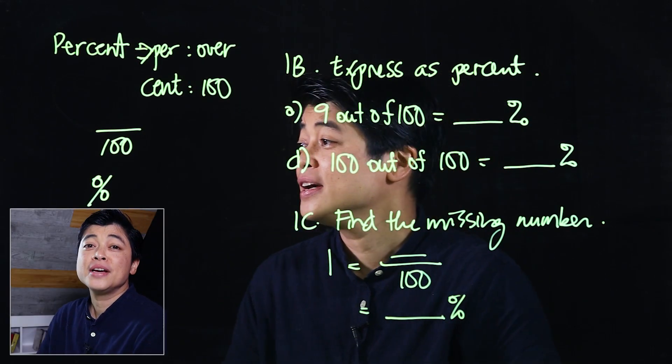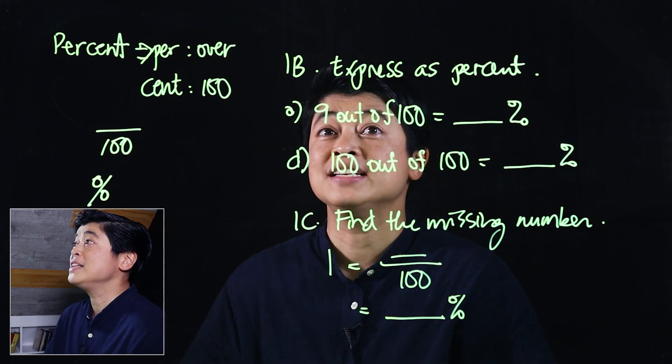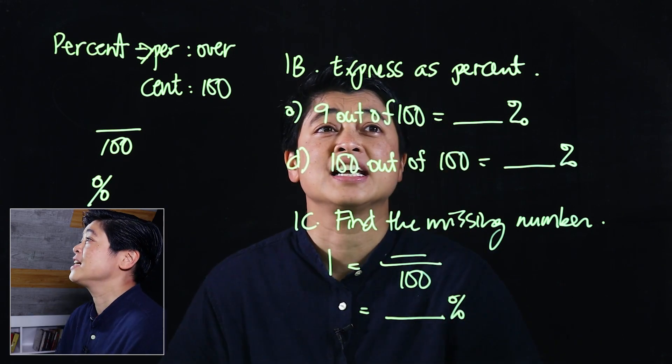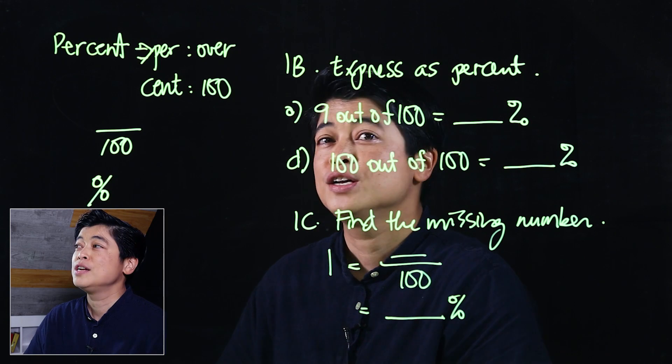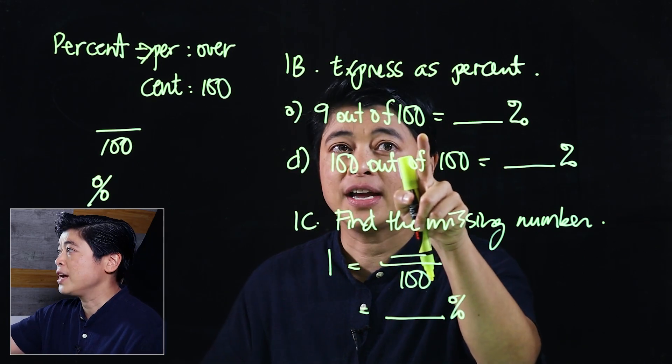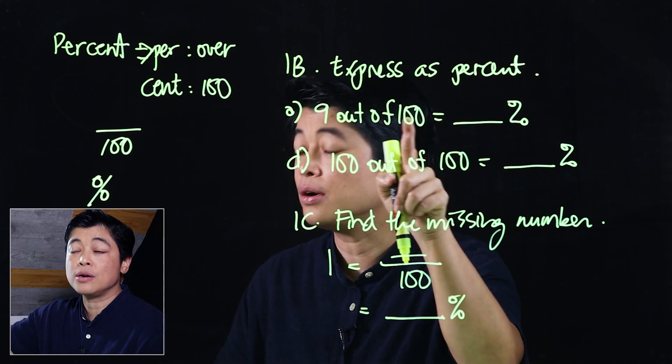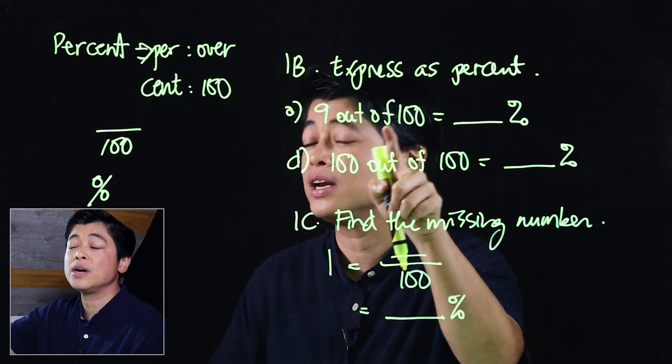The problems I've selected are problems 1b and 1c. In 1b it says express as percent. If it says 9 out of 100, then that means 9%. Out of is per, 100 is cent, so that means 9%.